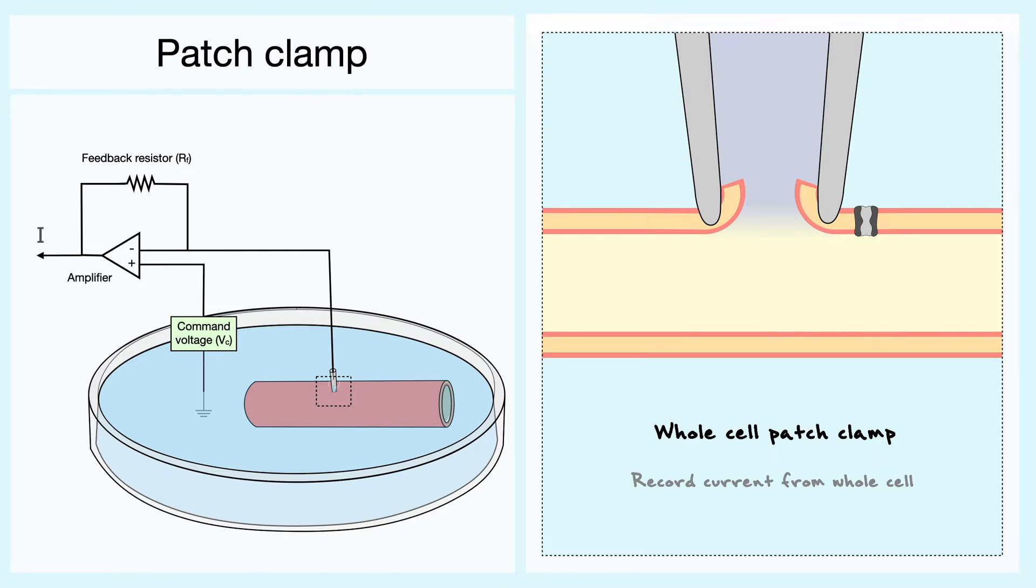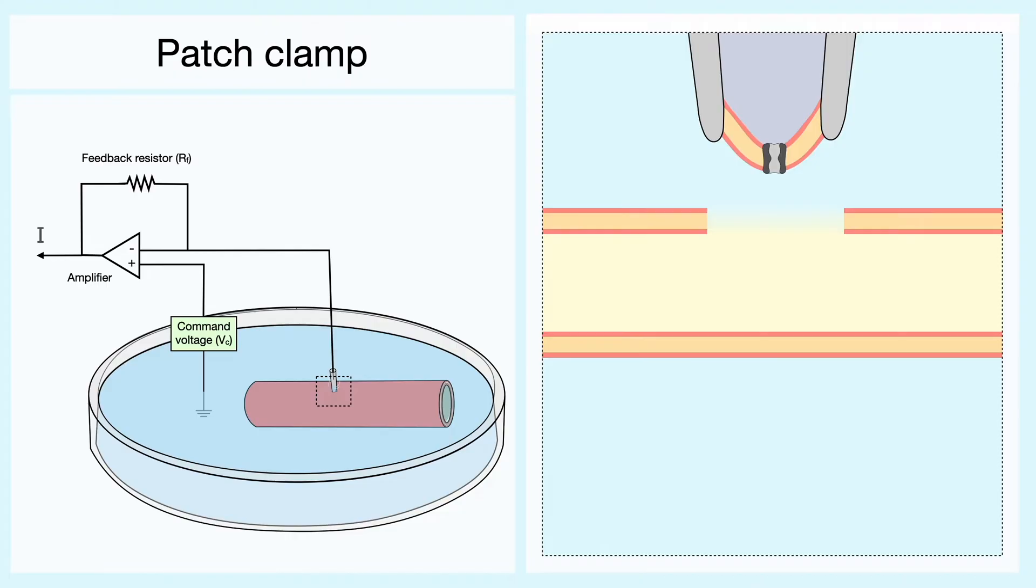From the whole-cell patch clamp, retracting the pipette with the seal still established will, here again, break the membrane, but interestingly enough, it will reform on itself to create this outside-out configuration. The outside-out configuration is very important when the experimenters want to have control on the extracellular medium. This is usually a good technique to measure currents going through individual ligand-gated channels.